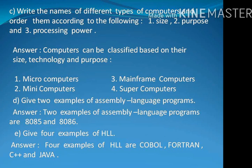Question: Give 2 examples of assembly language programs. Answer: 2 examples of assembly language programs are 8085 and 8086. Question: Give 4 examples of HLL. Answer: 4 examples of HLL are COBOL, FORTRAN, C++ and Java.